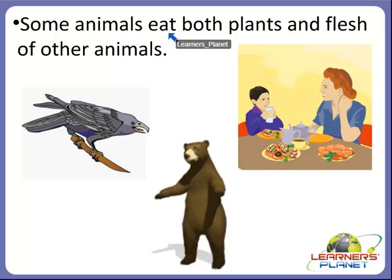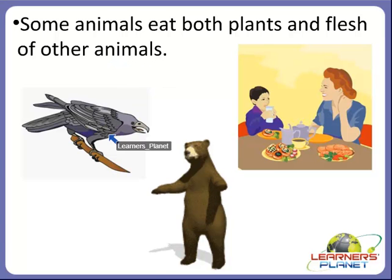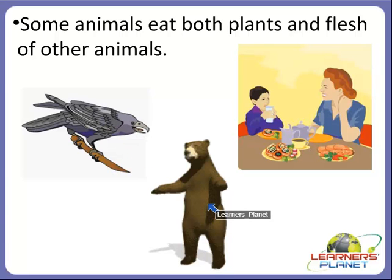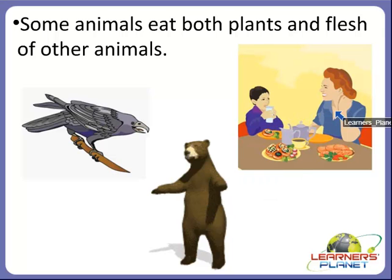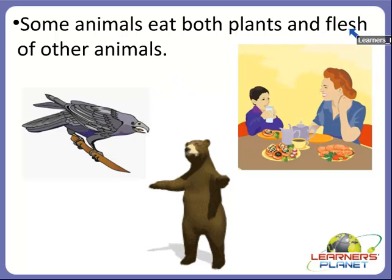Some animals eat both plants and flesh of other animals. For example, crow, a bear, and human beings. These are examples of those who eat both plants and flesh of other animals.